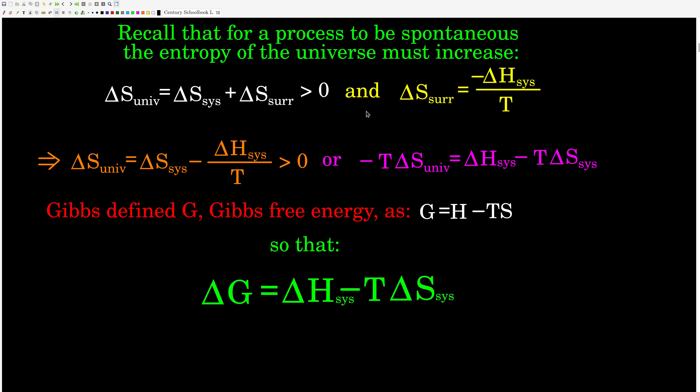The mechanism by which entropy is transferred between the system and the surroundings is through the transfer of thermal energy. At constant pressure, that is Q, and that is our delta H of the system. The change in entropy of the surroundings has the opposite sign of what happens in the system. If delta H is positive, that means this is an endothermic process, and the system is gaining thermal energy, which means that the surroundings are losing entropy. This equation here is pretty important, guys.